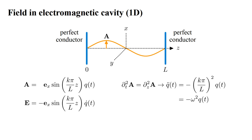The electric field is minus the time derivative of A, or -e_x sin(kπ/L)z times q̇. This vanishes at the perfect conductors, z equals zero and L, as it must.